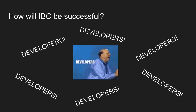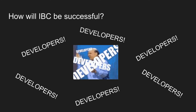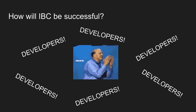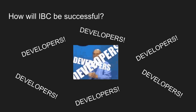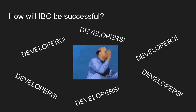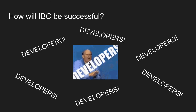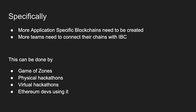So how will IBC be successful? It'll take time, but basically they need adoption from developers — developers, developers, as Steve Ballmer would say. It will take time with Cosmos zones, i.e., independent blockchains built using the Cosmos SDK and Tendermint, to connect to IBC. More application-specific blockchains need to be created, and more teams need to connect their chains with IBC. This can be driven by Game of Zones, physical hackathons, virtual hackathons, and Ethereum developers using it later on.